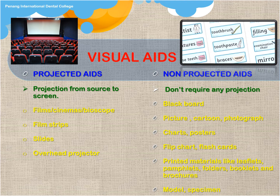Visual aids are divided into projected aids and non-projected aids. Projected aids involve projection from source to screen — films, cinemas, bioscope, film strips, slides, and overhead projectors. Non-projected aids don't require any projection: blackboard, pictures, cartoons, photographs, charts, posters, flip charts, flashcards, printed materials like leaflets, pamphlets, folders, booklets, brochures, models, and specimens.